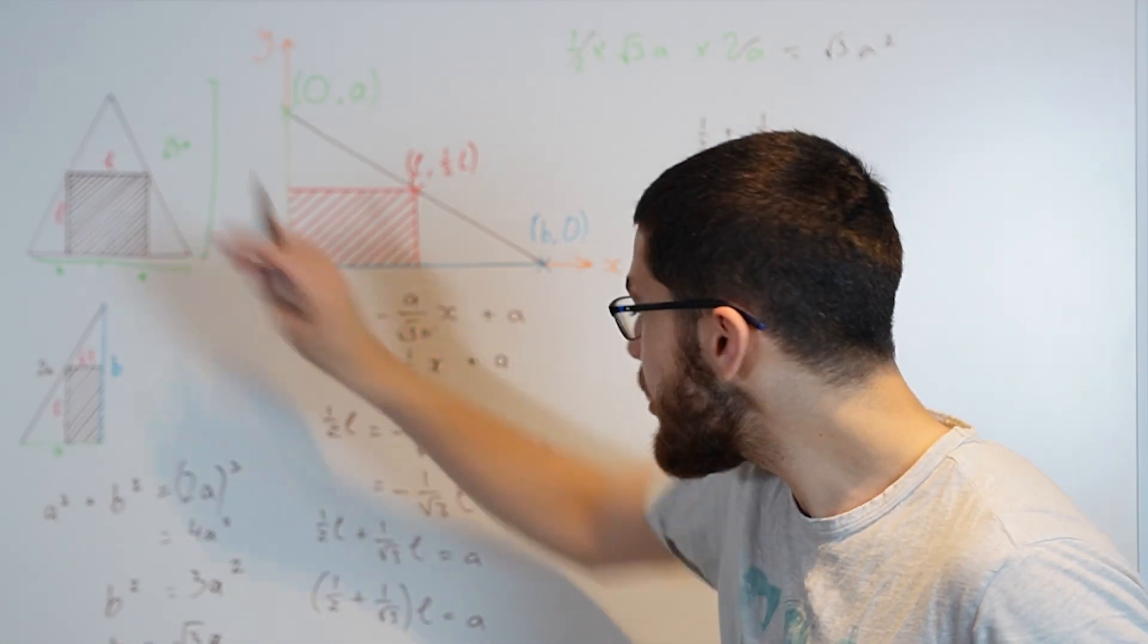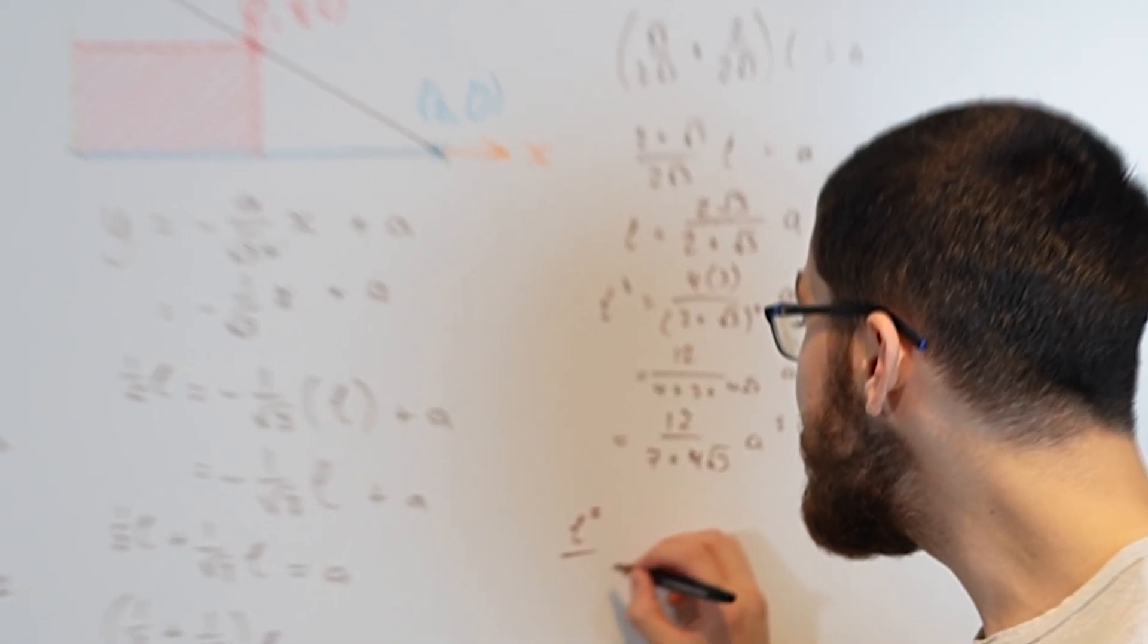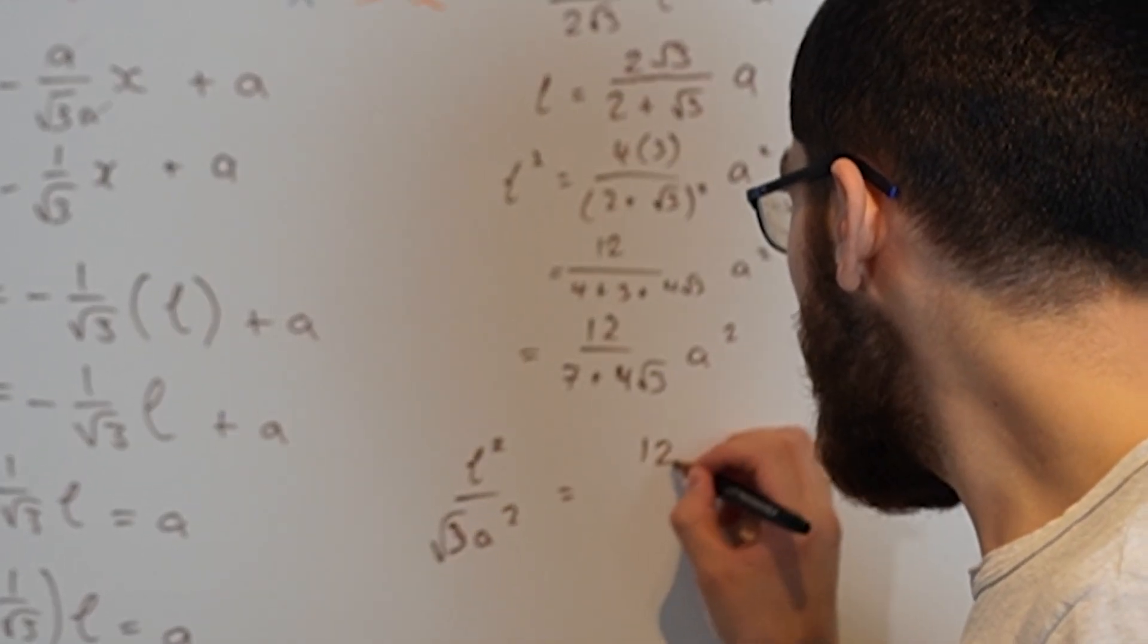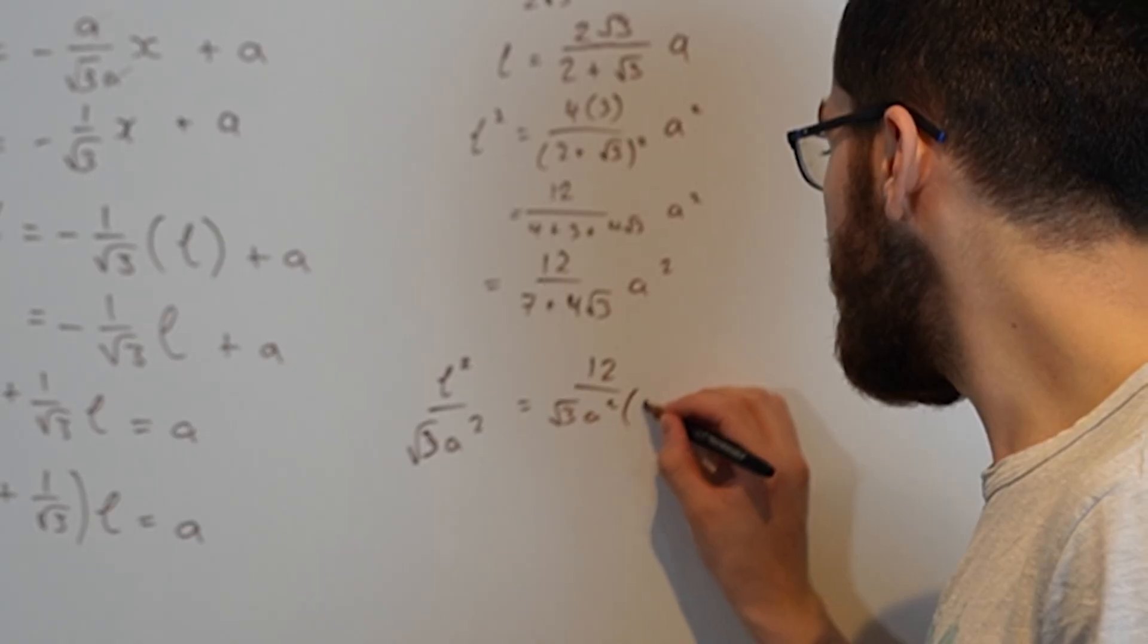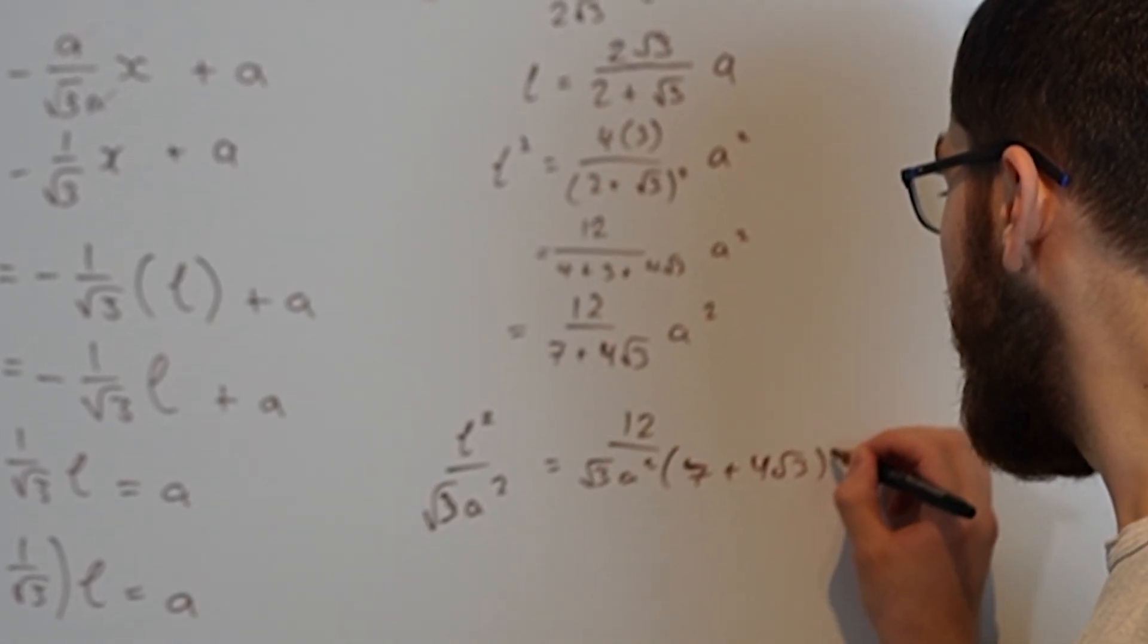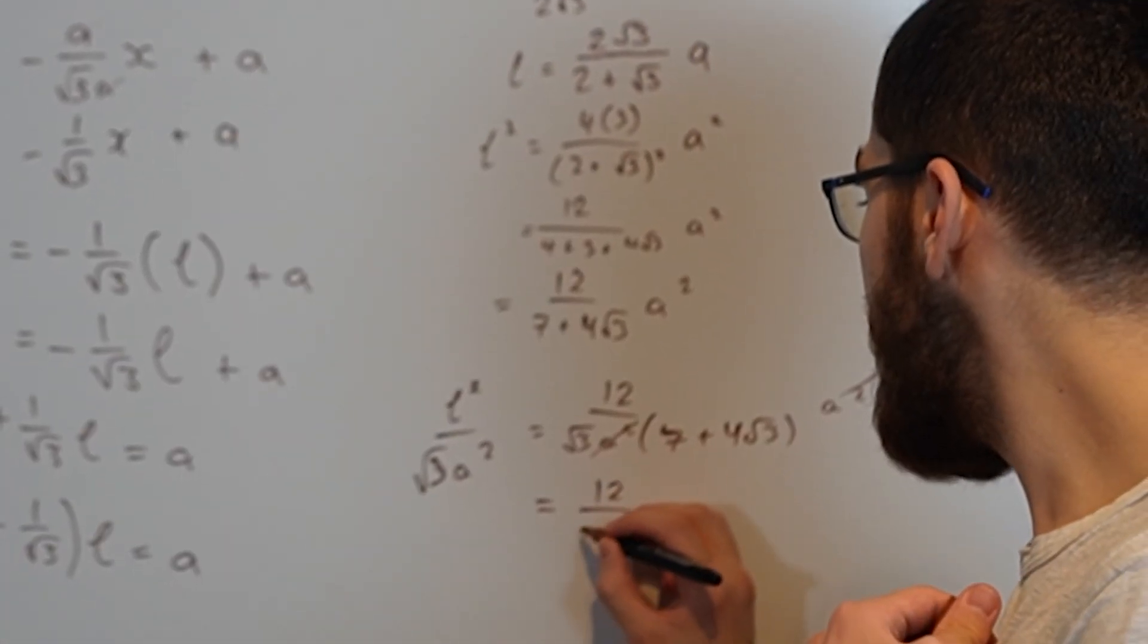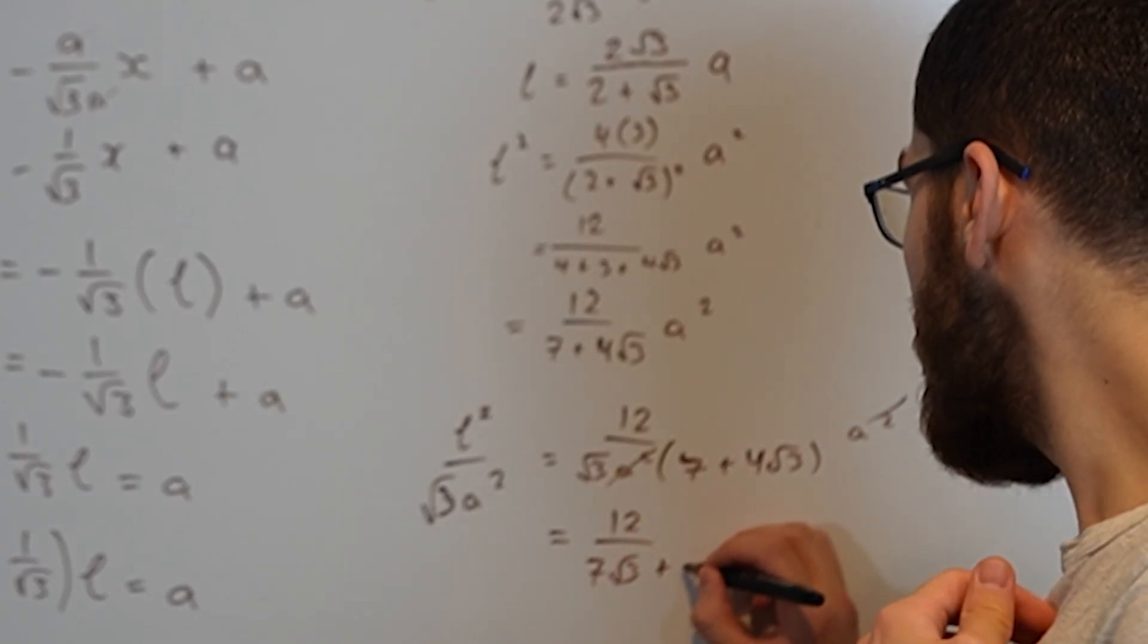Then we want to divide the area of the square by the area of the triangle. So we do L squared divided by root 3A squared, and that is going to give us 12 over 7 root 3 plus 4 root 3 is 12. The A squareds cancel.